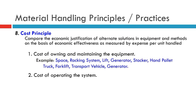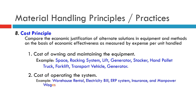Principle 8 — Cost principle: Compare the economic justification of alternate solutions, equipment, and methods on the basis of economic effectiveness as measured by expense per unit handled. Costs of owning and maintaining equipment include space and racking systems, generators, stackers, hand pallet trucks, forklifts, and transport vehicles. Costs of operating the system include warehouse rental, electricity bills, and manpower wages.